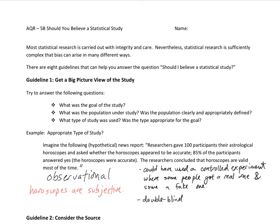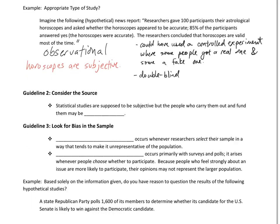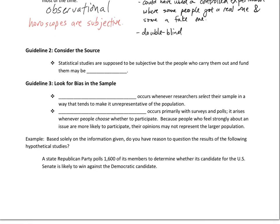The way participants are questioned afterward could also influence the results. To get even stronger results, this experiment should have been double-blind, so that both the people giving the horoscopes and the people receiving them don't know whether they are receiving a real or fake horoscope. Getting the big picture will always help.